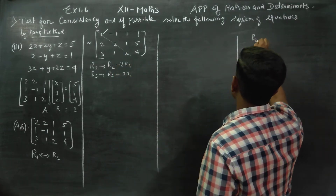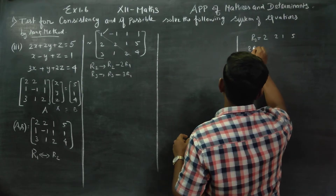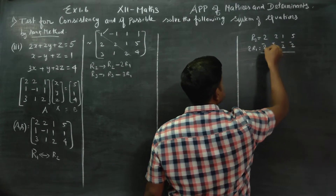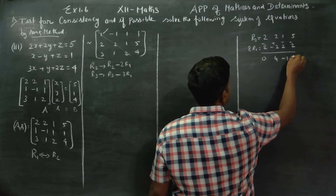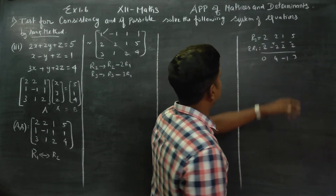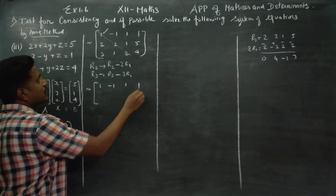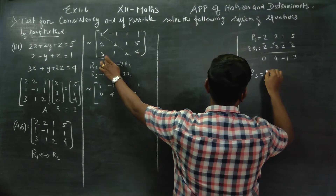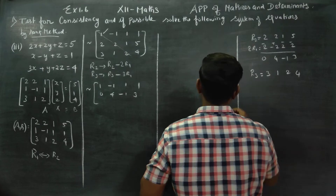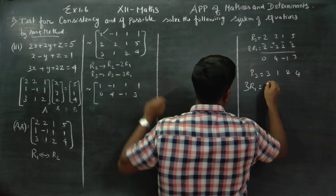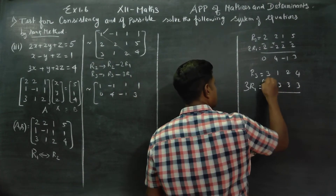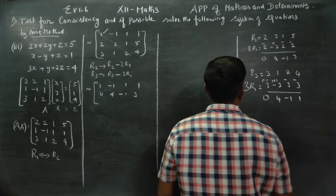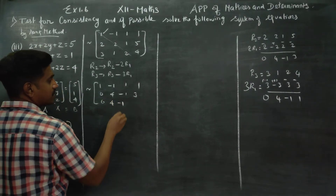Now I am going to compute R2. R2 is 2, 2, 1, 2, 1. Applying R2 minus 2 times R1: 2 minus 2 is 0, 4 minus 1 is 3, giving row 2 as 0, 4, minus 1, 3. For R3, applying R3 minus 3 times R1: 3 minus 3 is 0, 1 plus 3 is 4, 2 minus 3 is minus 1, 4 minus 3 is 1, giving row 3 as 0, 4, minus 1, 1.